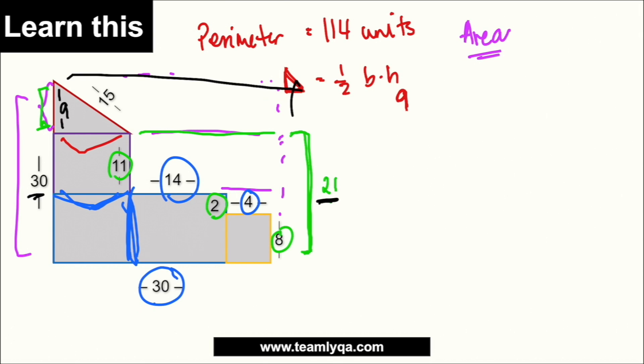So, anong gagawin ko? Para makuha ko itong part na ito, ia-add ko ngayon yung 14 at saka 4, which would give me 18. Tapos, kung 18 ibig sabihin itong part na ito, itong part na ito would be yung difference ng 18 at saka 30. So, ang gagawin ko is 30 minus 18. And makukuha ko ngayon itong paha lang, which is 12.